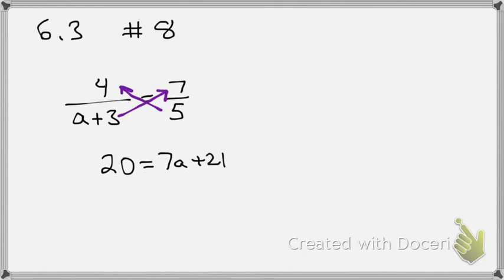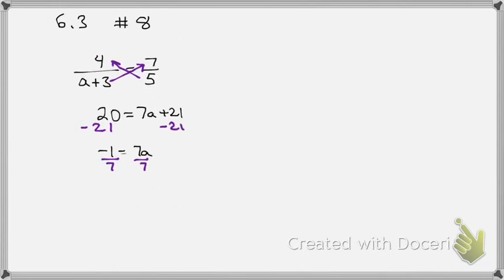And now try to get A by itself. What do I do? I'm trying to get A by itself. So negative 1 equals 7A. Divide by 7. Divide by 7. And we end up with what? Negative 1 over 7 equals A.